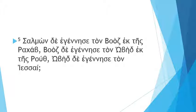Salmon de egenese ton Boas — Salmon begat Boas. And now we've got a feminine definite article — Boas begat from his wife, Rachel. And Boas engendered Obed from Ruth.